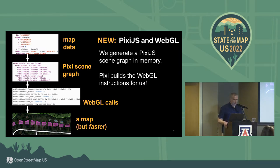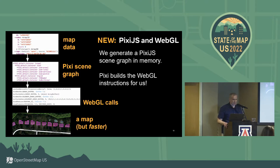This is the new graphics pipeline. Our familiar map data still flows into it, but now we generate a Pixi scene graph in memory. Pixi then turns that into WebGL draw calls, and it's very good at doing this — for example, it batches similar things together. If you have a lot of magenta buildings, it fills up a buffer of points and tells WebGL: set the color magenta and draw what's in the buffer. So it's fast. We get our map drawn onto a WebGL canvas instead of a chunky SVG document.